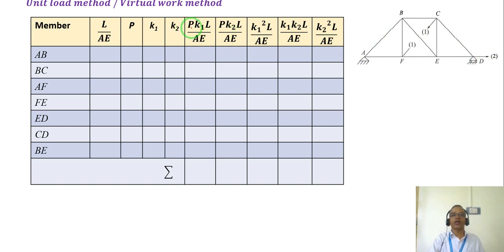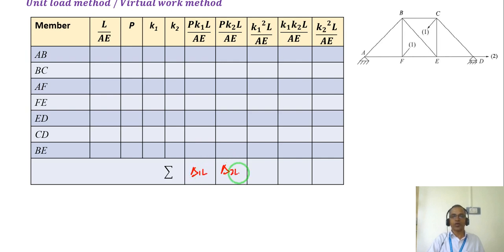The sum of P times K1 times L/EA for all members gives delta 1L. The sum of P times K2 times L/EA gives delta 2L. The sum of K1 squared times L/EA gives delta 11, and the sum of K2 squared times L/EA gives delta 22. It's very simple — we are summing up delta 11, delta 22, and delta 12.